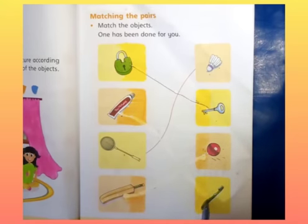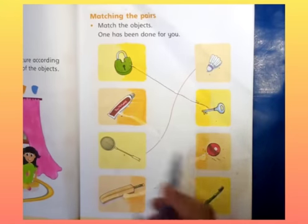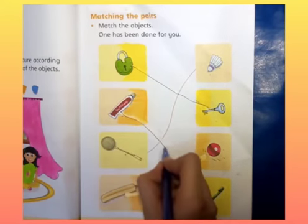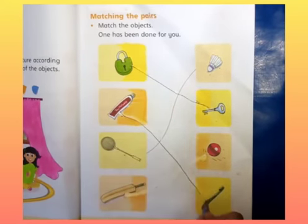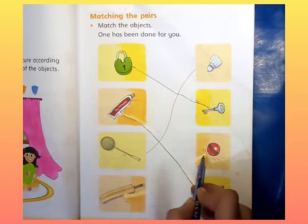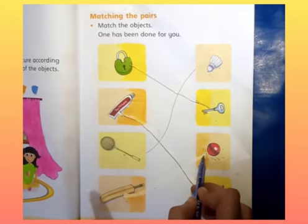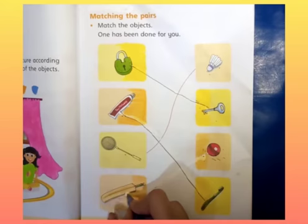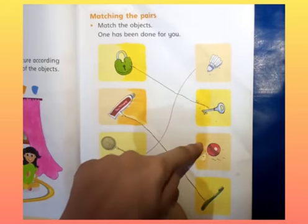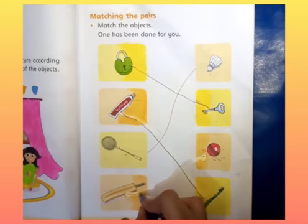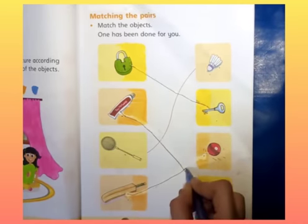Match. This is a bat and ball. Now we will match this ball with the bat. If you play this ball, we will match this bat with the ball. This is the last object. Then we will match them.